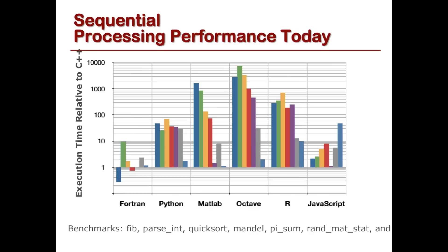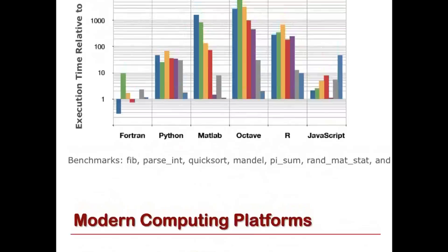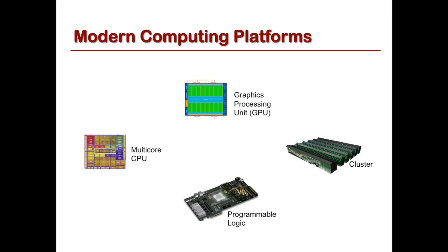The point of this graph is to show that the languages most people like to program in, like Python or MATLAB or R, are a factor of 10, 100, or even 1,000 times slower than languages people probably don't like to program in as much, like C or Fortran. This is just for programming a single processor. Today's computing landscape is really parallel — and not just parallel in one dimension, but in multiple dimensions. It's what we call heterogeneous. We have multi-core chip designs, which my research lab pioneered in the mid-90s.